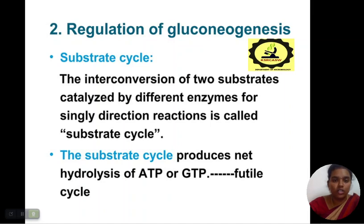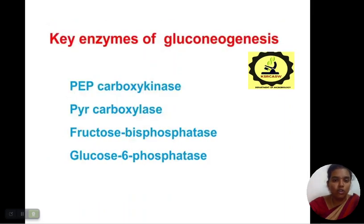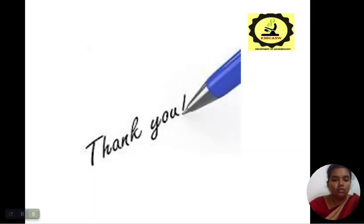The regulation of gluconeogenesis is also called the substrate cycle. The interconversion of two substrates catalyzed by different enzymes in singly-directional reactions is called a substrate cycle, which produces net hydrolysis of ATP or GTP — also called a futile cycle. The key enzymes of gluconeogenesis are PEP carboxykinase, pyruvate carboxylase, fructose 1,6-bisphosphatase, and glucose 6-phosphatase.